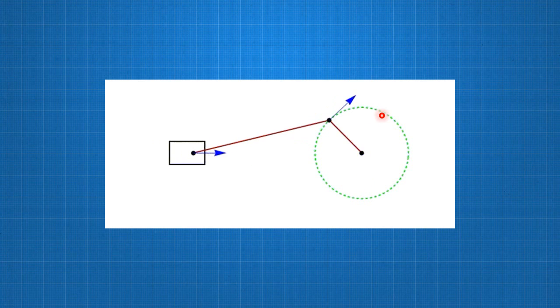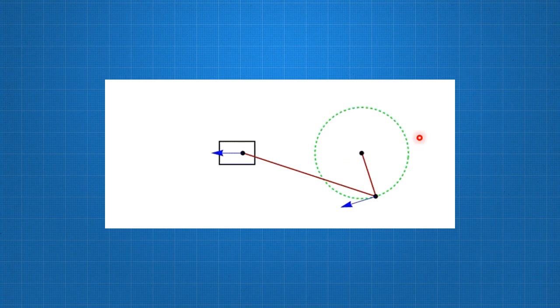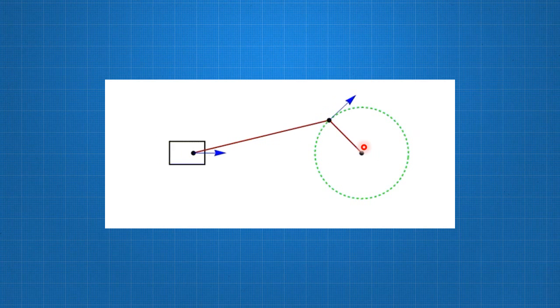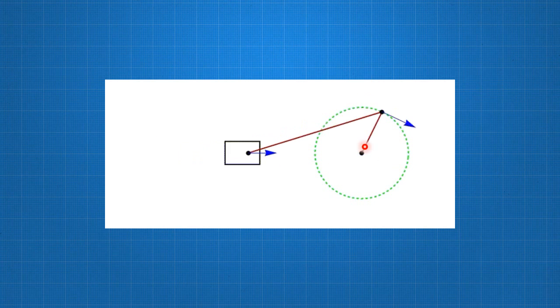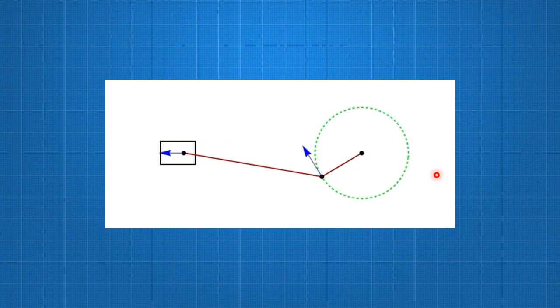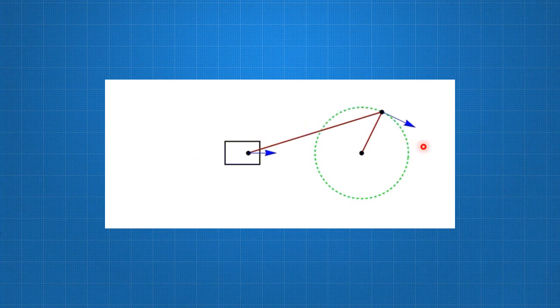These can be determined analytically or graphically. If we use Klein's construction, for that particular crank angle you need to draw a configuration diagram. Now we will look into Klein's construction by taking one example.